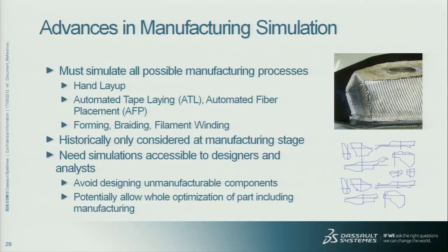The other aspect we've been working on for many years is manufacturing simulation. Composites are complex materials and their application varies hugely, so the list of manufacturing processes to simulate is long. Hand layup is still dominant in the high-performance composites world. But we also have automated tape laying, automated fiber placement, and increasingly new manufacturing methods like forming, braiding, and filament winding. We're working with automotive companies who, in the next year or two, are going to be producing carbon fiber or graphite fiber cars at a volume of 50,000 a year — something unheard of. The only way to make this more efficient is by simulating these manufacturing methods.